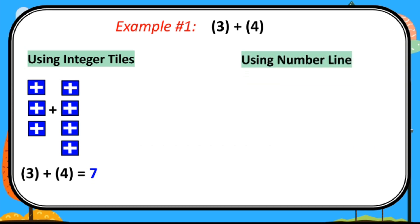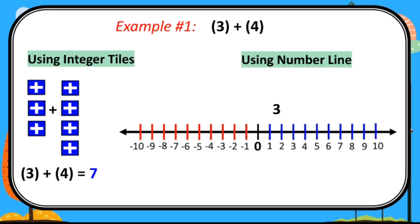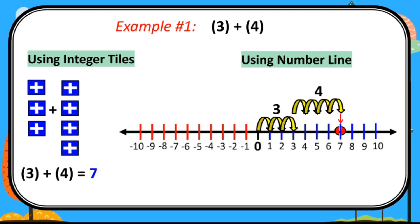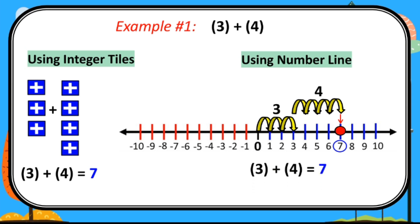Using number line: we move 3 units to the right starting from 0 — 1, 2, and 3. Next, our second addend is positive 4, so we move 4 units to the right starting from where we ended — 1, 2, 3, and 4. Then we look at the corresponding integer. We have positive 7. Therefore, positive 3 plus positive 4 equals positive 7. Same answer as the integer tiles.